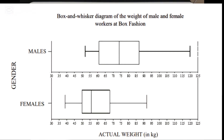For the male data, the minimum is approximately 52, Q1 is around 60, Q2 (the median) is around 74, Q3 is around 83, and the maximum is 120. Looking at the female data, the minimum is around 38, Q1 is at 50, Q2 is around 57, Q3 is around 68, and the maximum is around 92. These are the actual weights in kg.